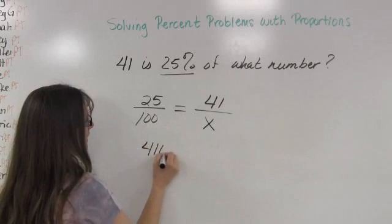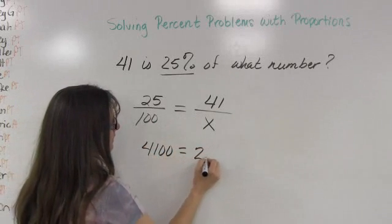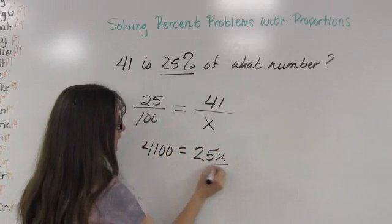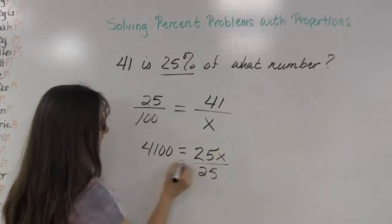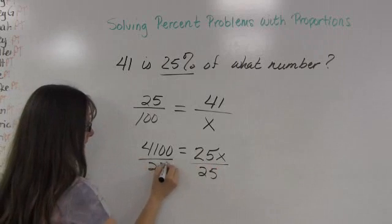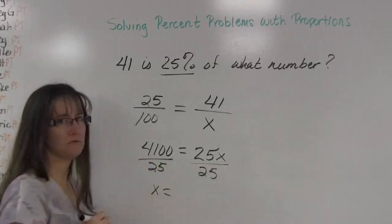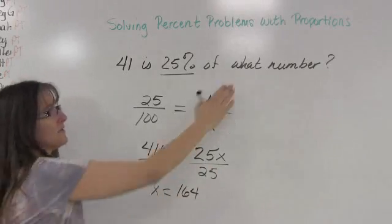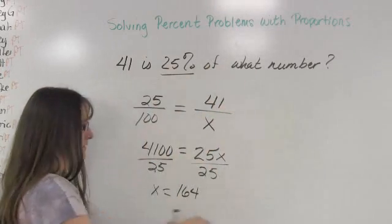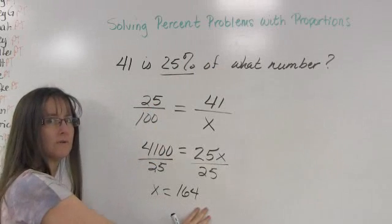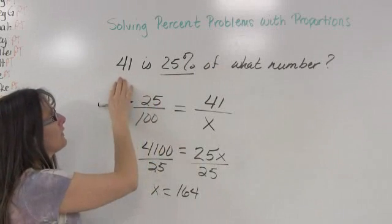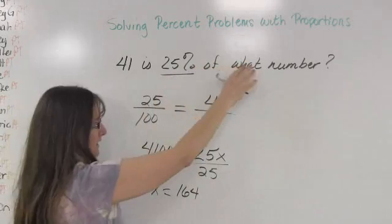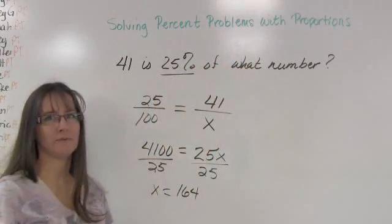41 times 100 is 4100, and that's going to equal 25 times x, which is 25x. So I'm going to divide both sides by 25, and I will discover that x is equal to 164. Now, I was looking for a number this time, not a percent, and so this is the answer, x is equal to 164. 41 is 25% of 164.